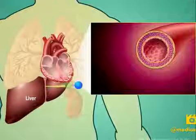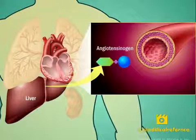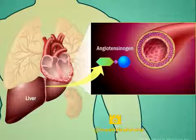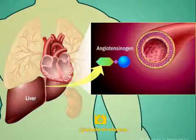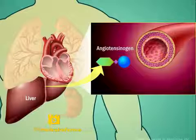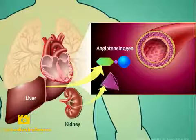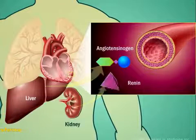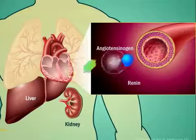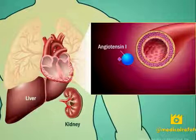The system begins with the release of angiotensinogen into circulation by the liver. This may be in response to low blood pressure and adverse changes in sodium concentrations. An enzyme, renin, is secreted which cleaves angiotensinogen to form the inactive decapeptide angiotensin 1.